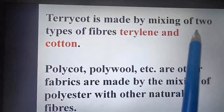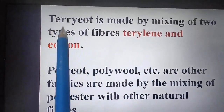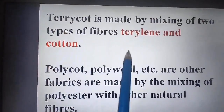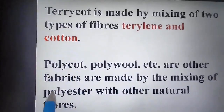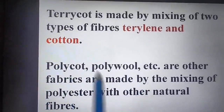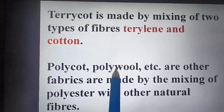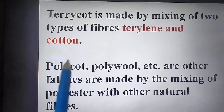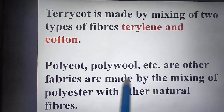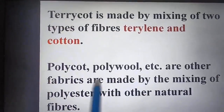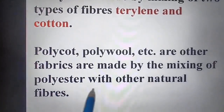Terricot is made by mixing two types of fibers — terylene and cotton. 'Terry' comes from terylene and 'cot' comes from cotton. Similarly there is polycot (polyester + cotton) and polywool (polyester + wool). These mixed fabrics are made by mixing polyester with other natural fibers.